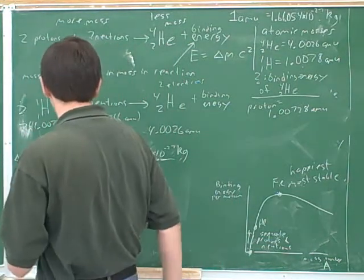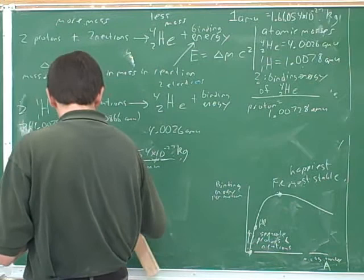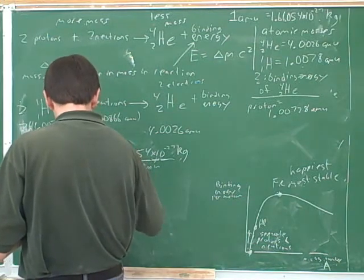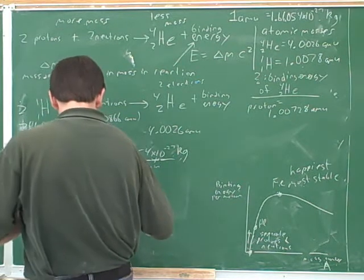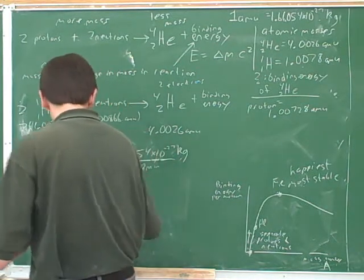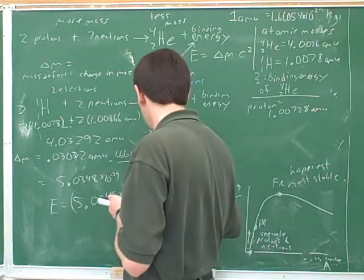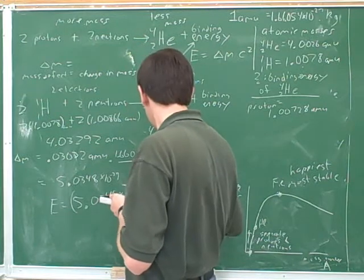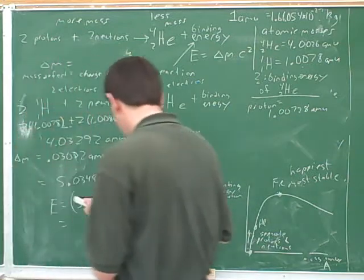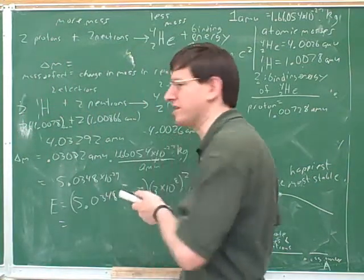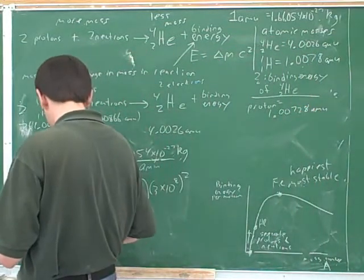And that's in joules, so now we can plug in to E equals MC squared. That's times 10 to the negative 29. So now we have to look up C. What is that going to be? 3.0 or 2.98 whatever, but 3.0 times 10 to the 8. Yeah, we can call that 3 times 10 to the 8. And we have to remember to square that.